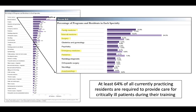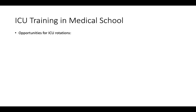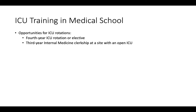If every doctor should be familiar with the basics of critical care medicine and the majority of residents will work in an ICU at some point during their training, what are ways to gain ICU experience in medical school? A medical school may require an ICU rotation during the fourth year or likely offers an ICU elective. Another opportunity is a third-year internal medicine clerkship at a site with an open ICU, a situation commonly encountered in VA medical centers. The classic ICU structure can also be referred to as a closed ICU.